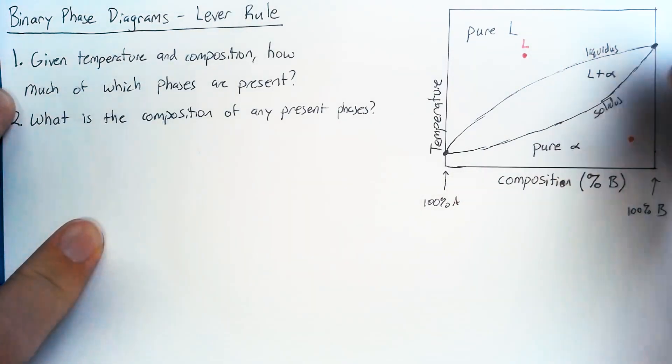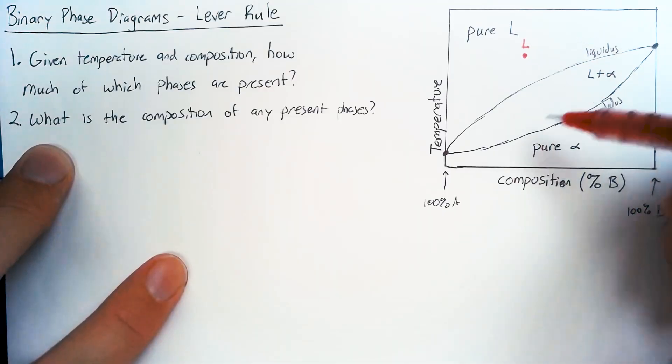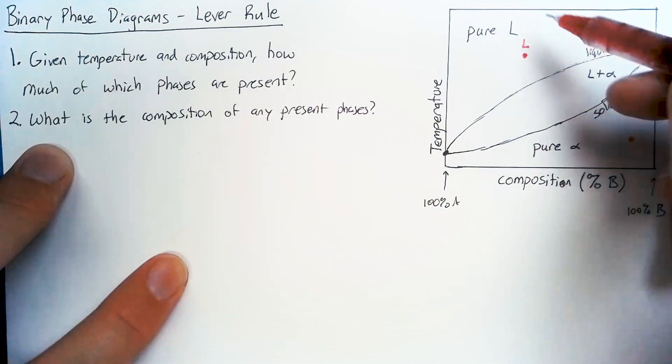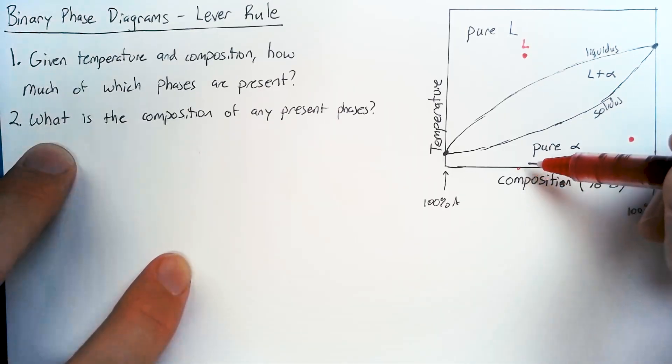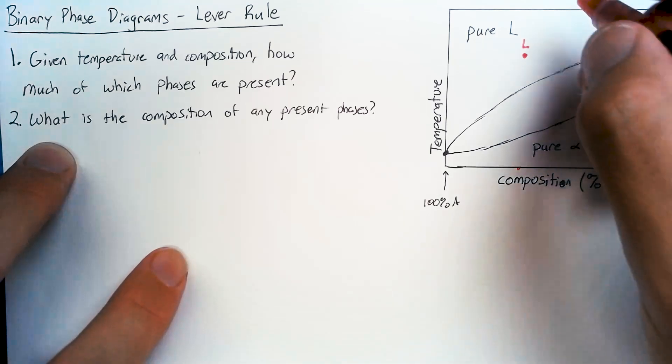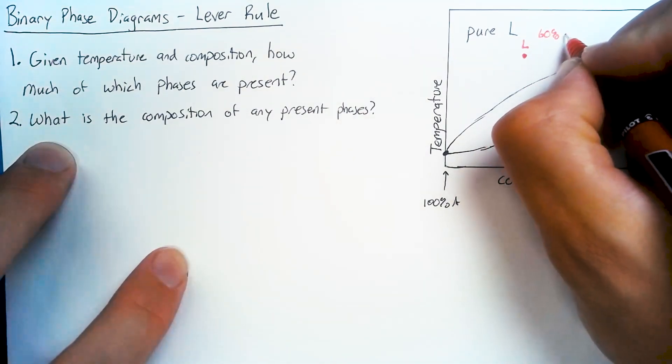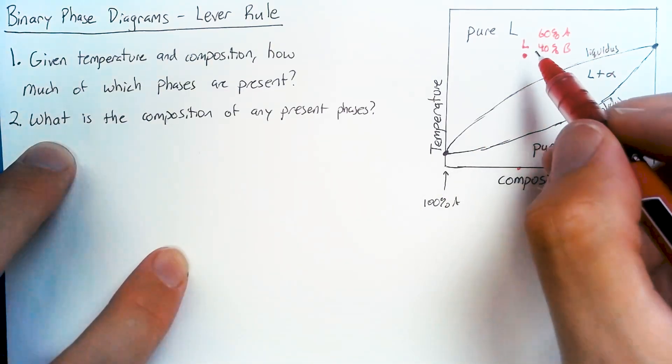Well, we are 100% liquid. What is the composition of that phase? Well, the composition of that phase is basically the same as the overall composition. So we can just look down at the overall composition down here. We see that this is roughly 40% B. And that means that we have 60% A and 40% B in this liquid.